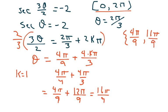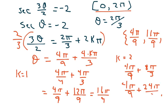Do you think another solution will work? Let's try k equals 2. We get 4 pi over 9 plus 8 pi over 3, which is 4 pi over 9 plus 24 pi over 9. Clearly, that's too big. This is bigger than 2 pi, so we have to disregard that.